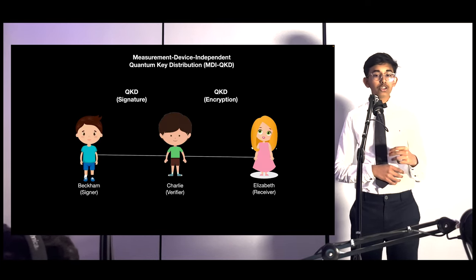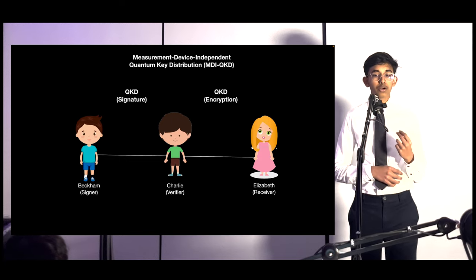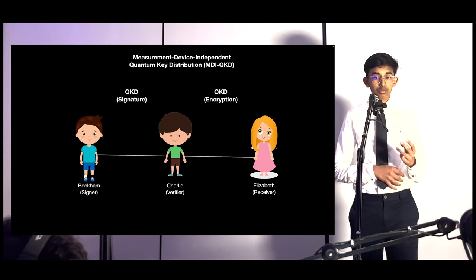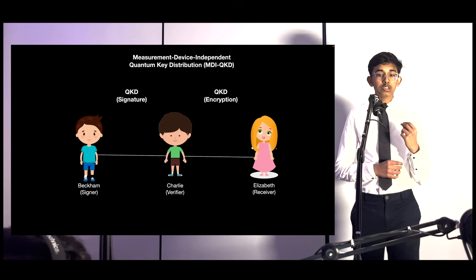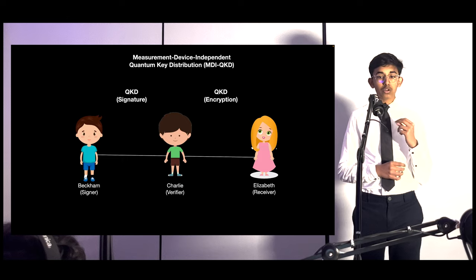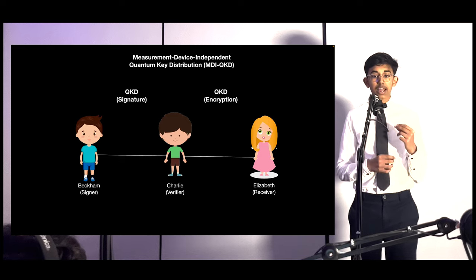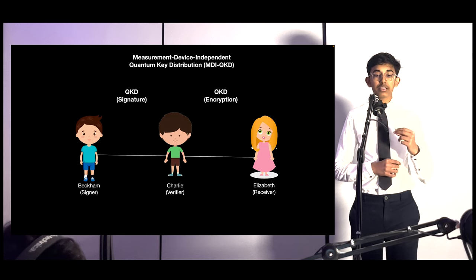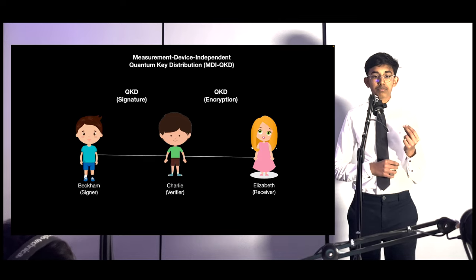MDIQKD is a more secure QKD variant against certain attacks. MDIQKD involves a third party, Charlie, in the key generation process. Charlie generates entangled particles and sends them to Elizabeth and Beckham via the quantum channel. By involving a third party, MDIQKD is less vulnerable to attacks exploiting weaknesses in the measurement device used to measure entangled particle properties.